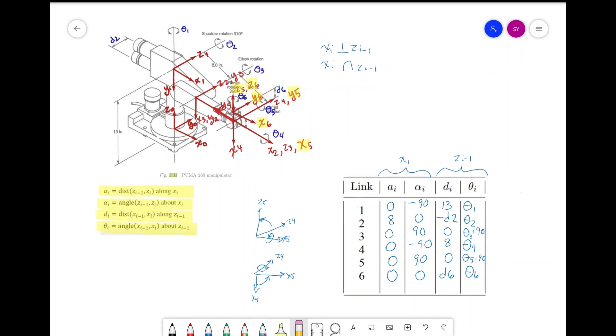Now that we have our DH parameters, we can plug them into our equation for A_i, which will give us 6 homogeneous transformation matrices: A1, A2, A3, A4, A5, and A6. And that's it.